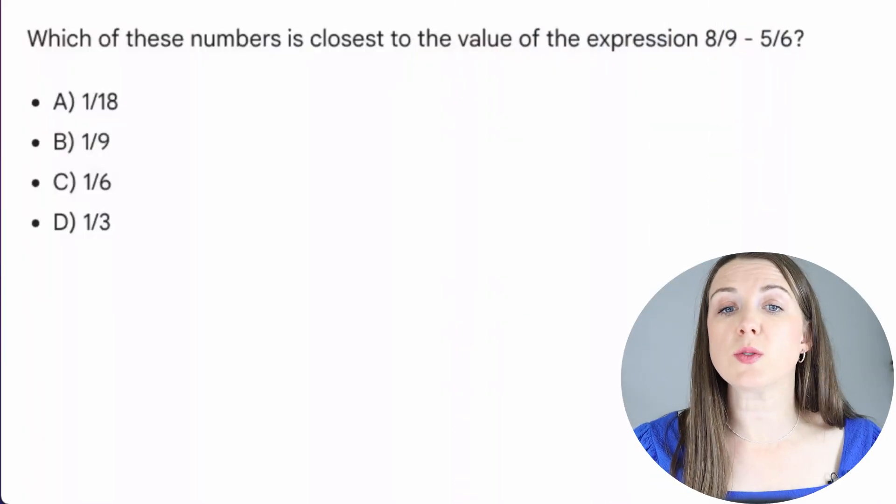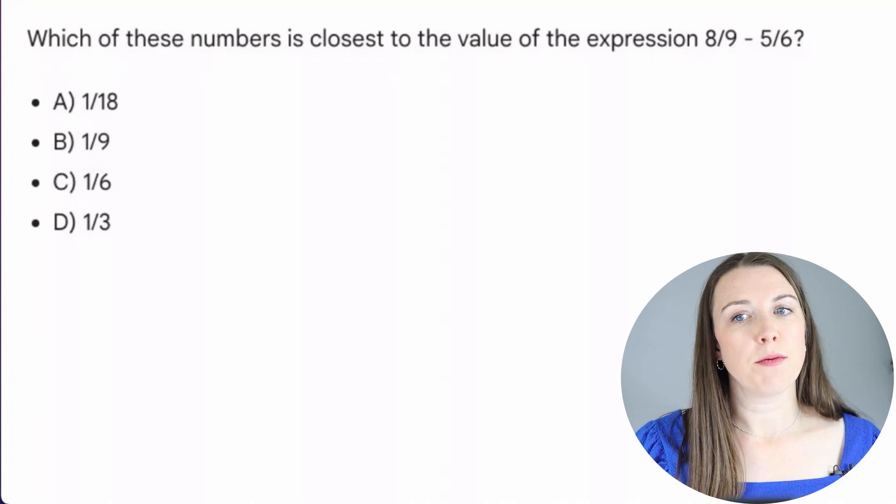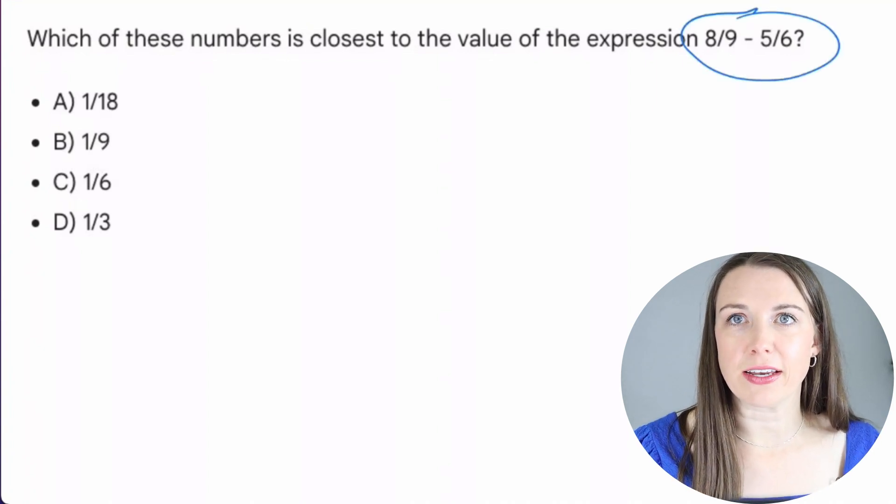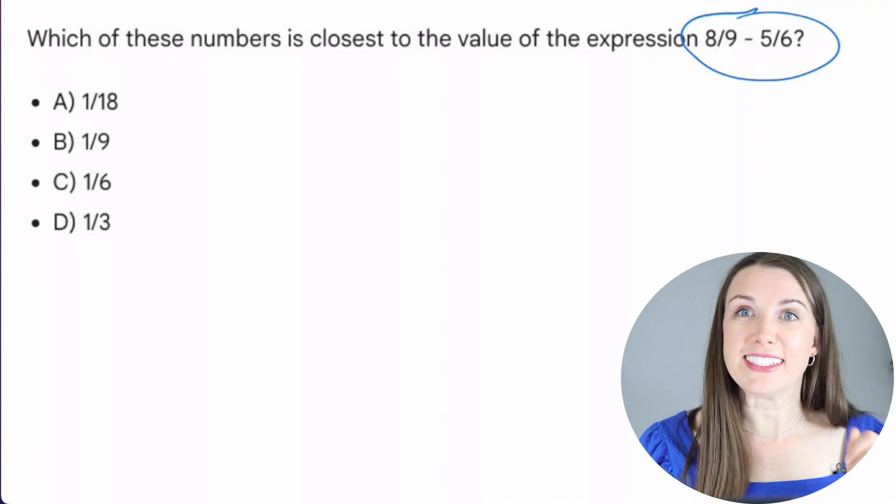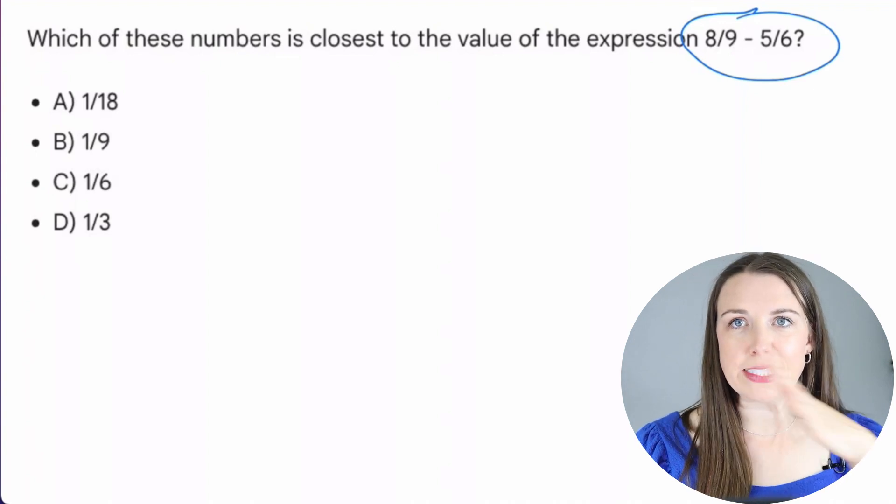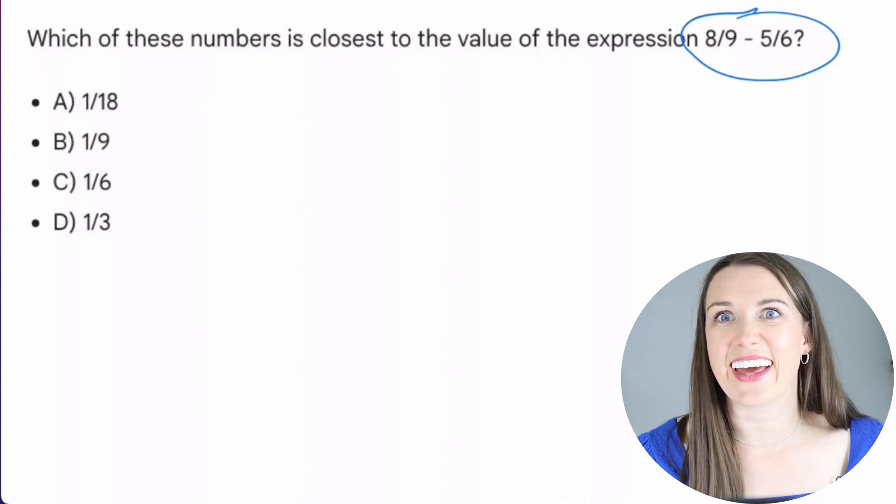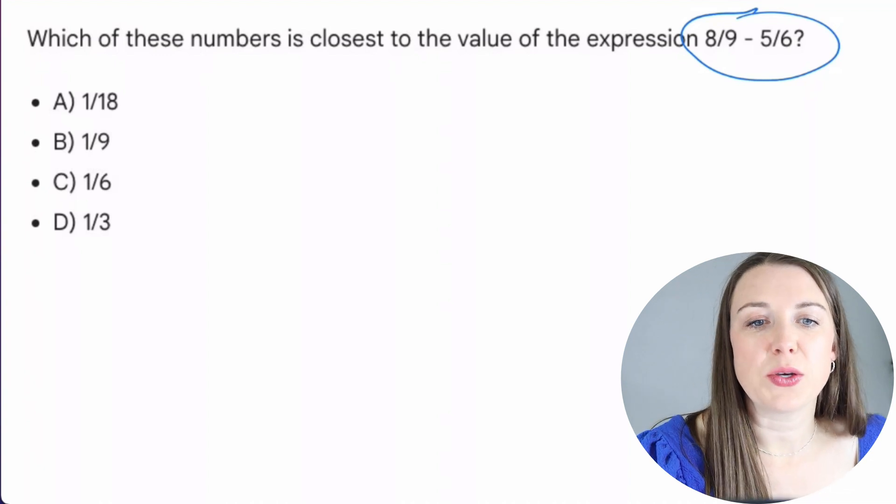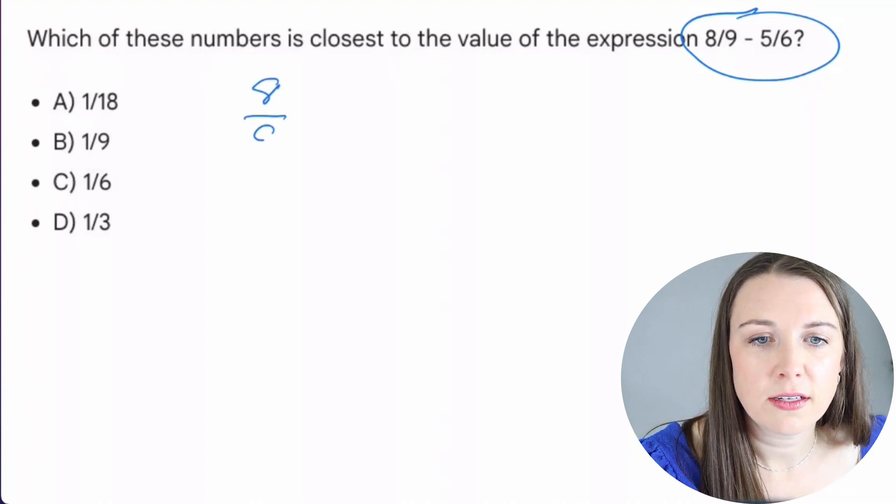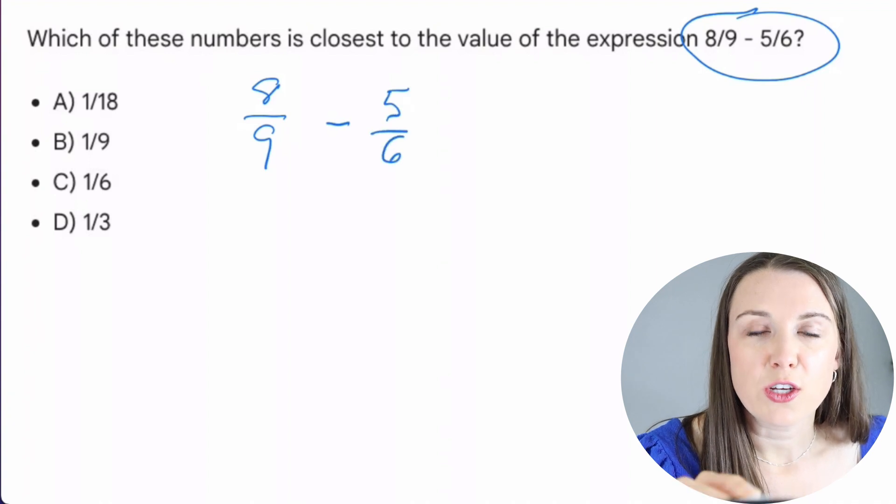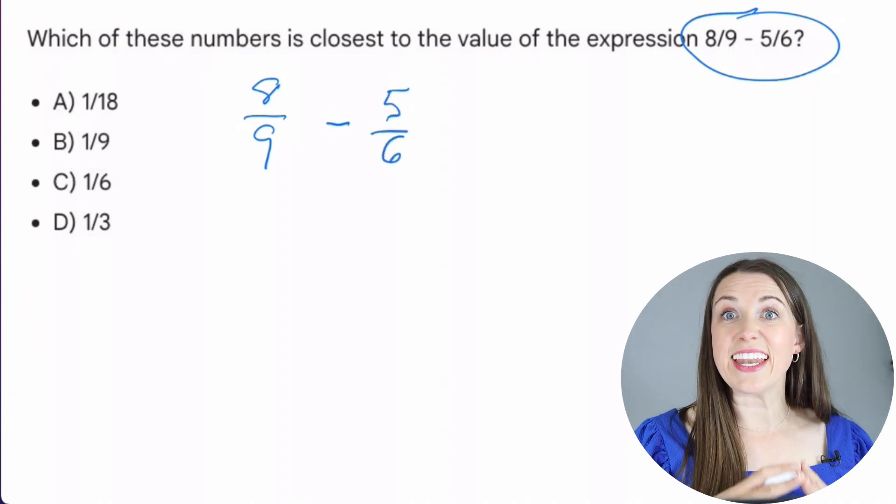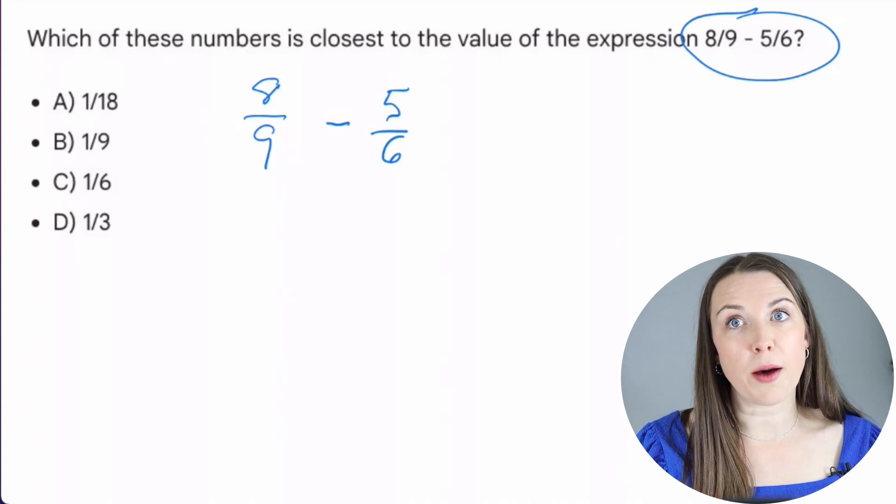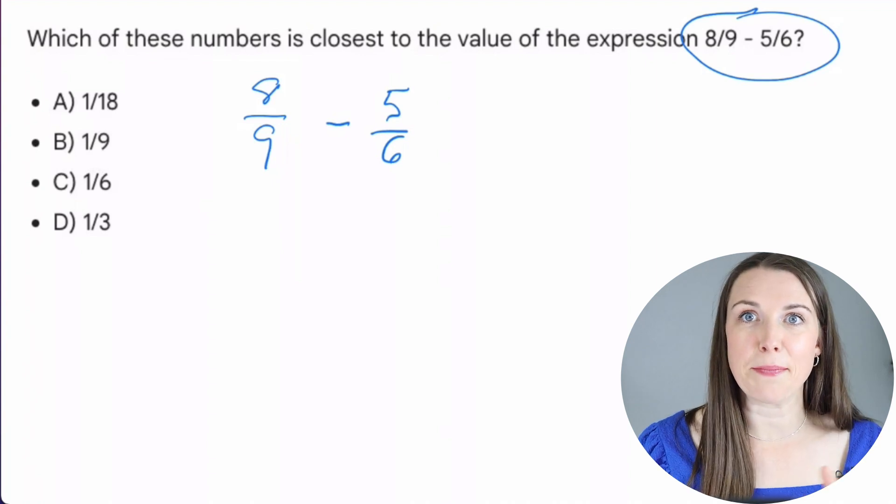Which of these numbers is the closest to the value of the expression 8/9 - 5/6? When I look at these numbers, I think it looks like a date, right? It looks like August 9th through May 6th, right? But sometimes fractions have that slash and sometimes they have the line just like we're looking at in the last few. So this time, subtracting the two numbers. So we have 8/9 - 5/6.